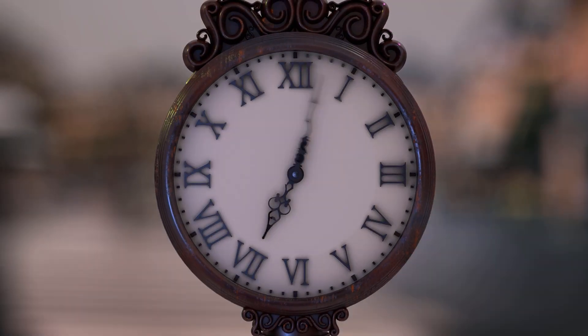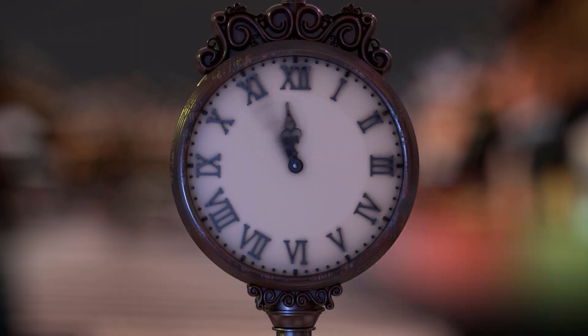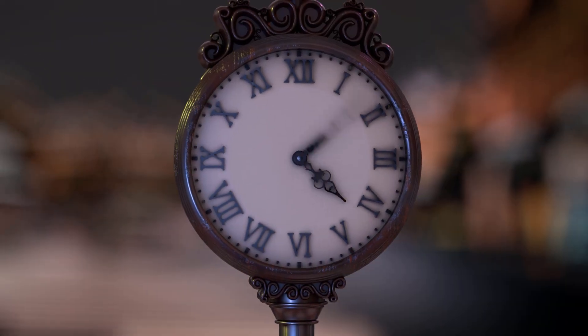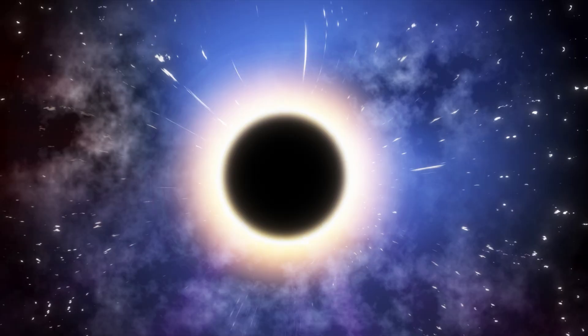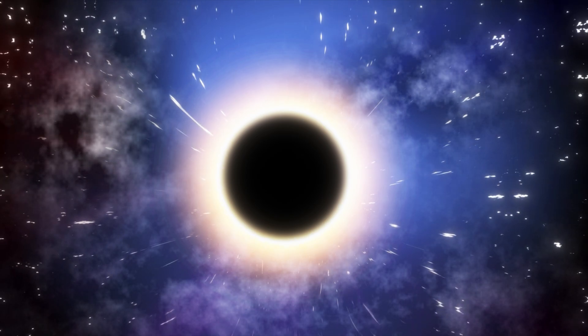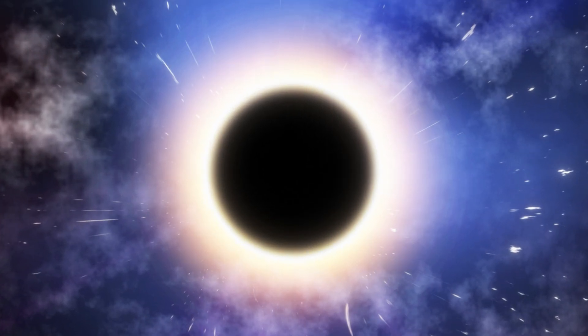Time itself isn't the same for everyone, everywhere. So, where do we find the slowest clocks in the universe? The answer lies in the most extreme places. Black holes.